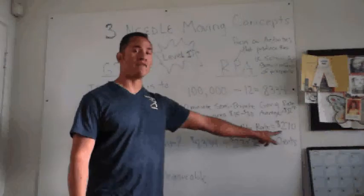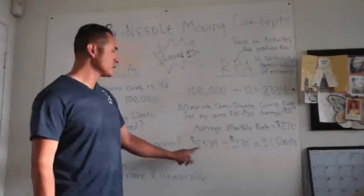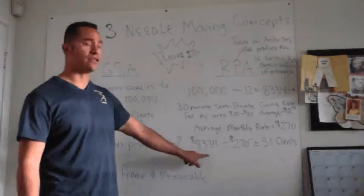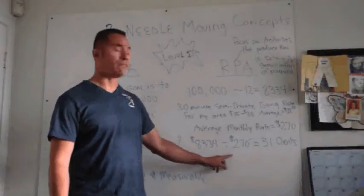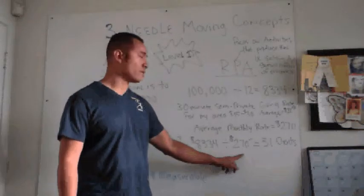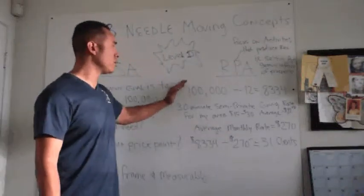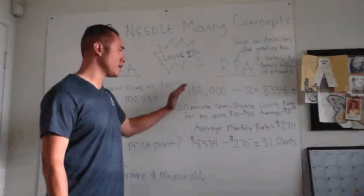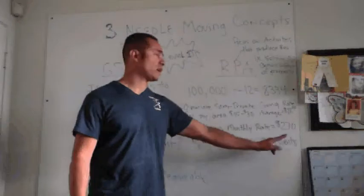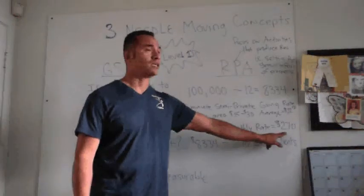So the average monthly rate that somebody would be paying is $270. So I take $8,334 divided by $270 a month equals 31 clients. So in order for me to meet my goal of $100,000 a year I would need 31 clients paying me $270 a month.